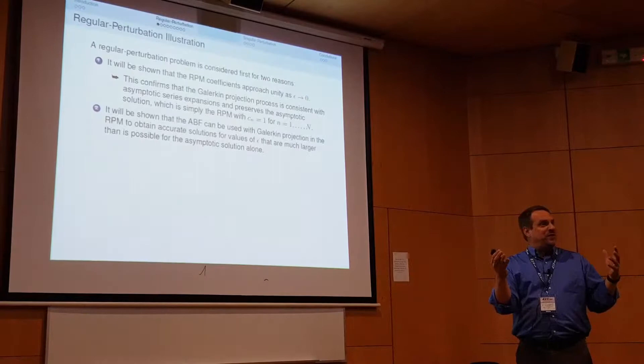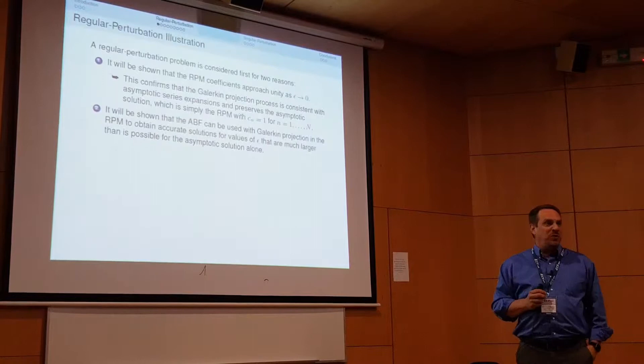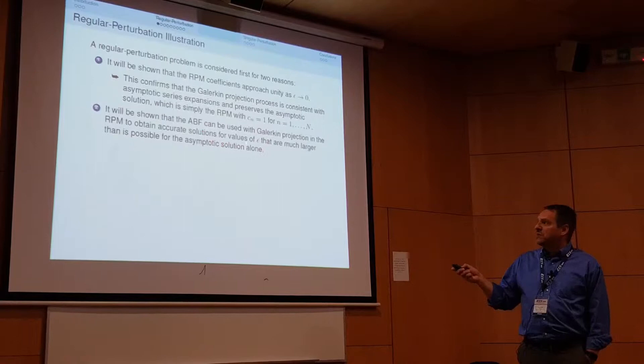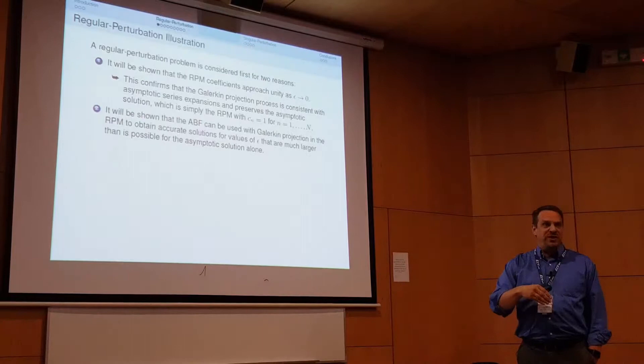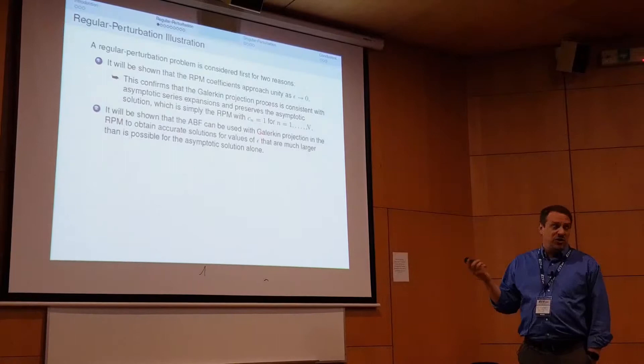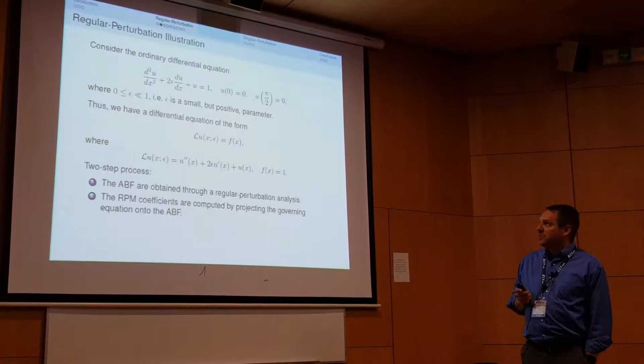The second, more powerful thing I want to show is that — while asymptotic methods are great but only apply for small epsilon — using asymptotic expansions as asymptotic basis functions through Galerkin projection, we can get solutions that are actually quite good even for rather large, order-one epsilons, well beyond what the asymptotic expansion alone would give.